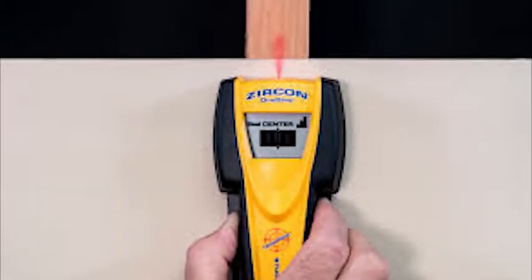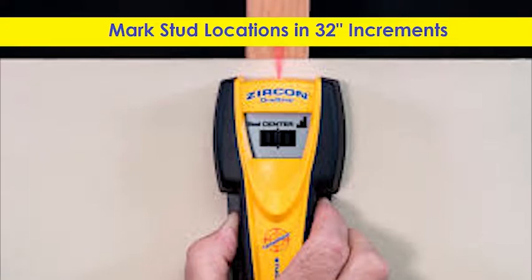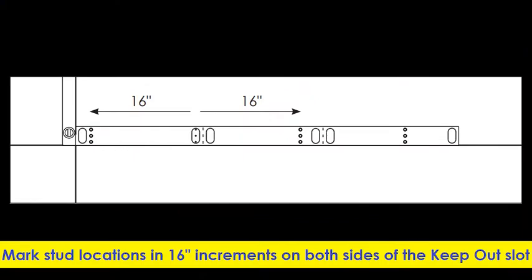Find and mark the stud on the wall closest to the vertical tube edge line along the horizontal tube line. Continue down from this mark, marking stud locations in 32 inch increments. If a stud location directly overlaps a keep out slot on a tube, mark new stud locations at 16 inch increments.